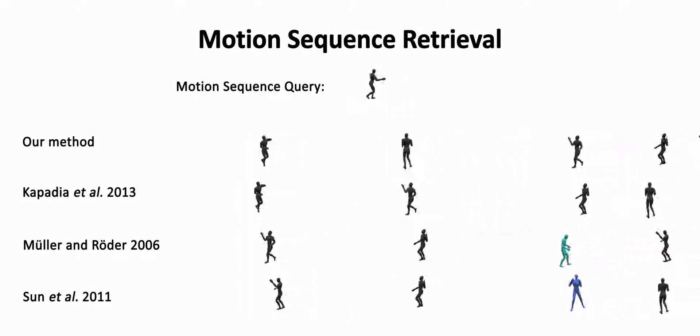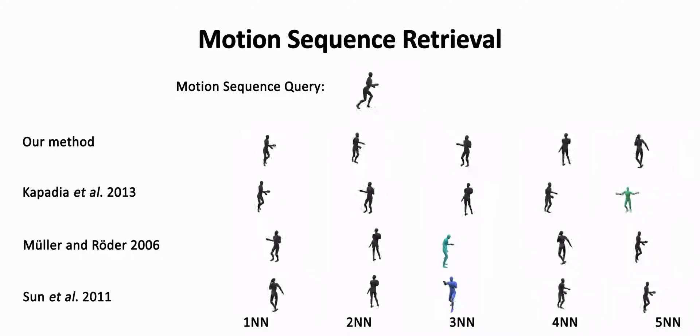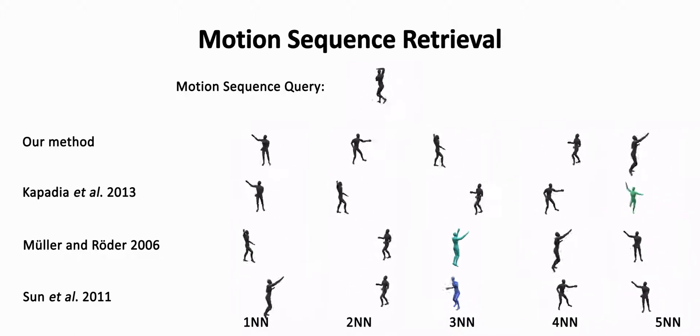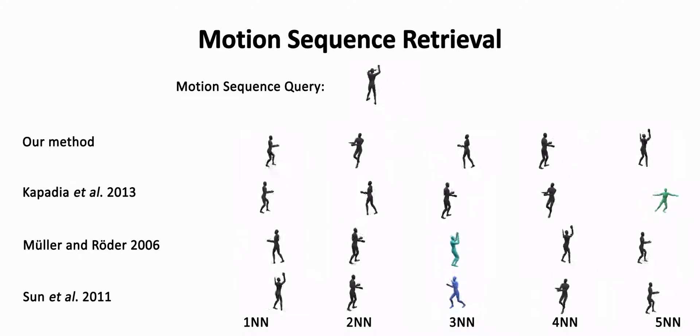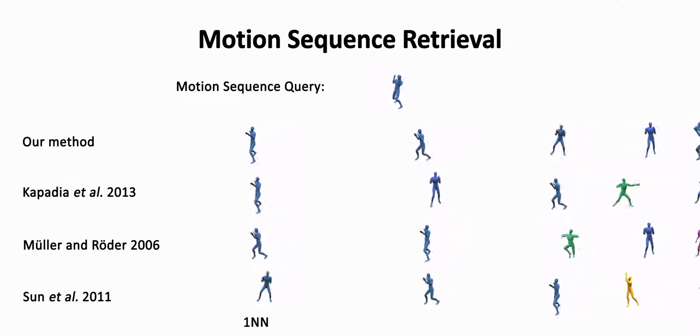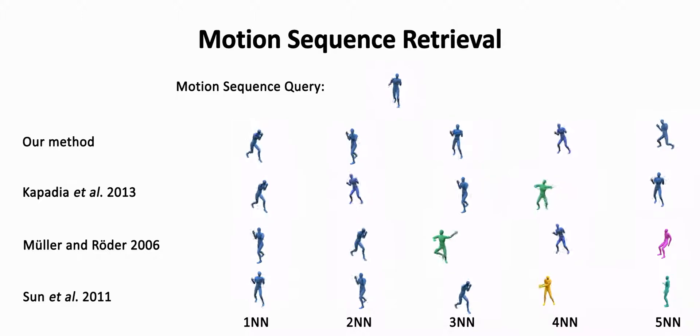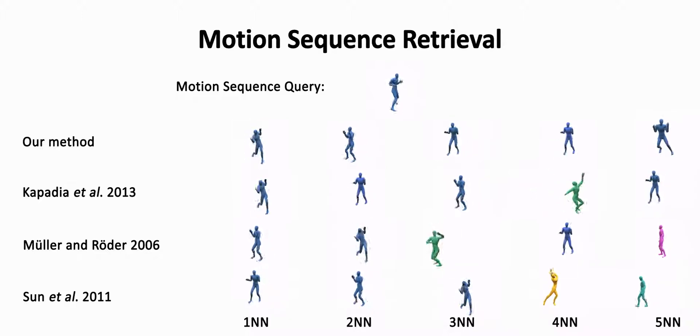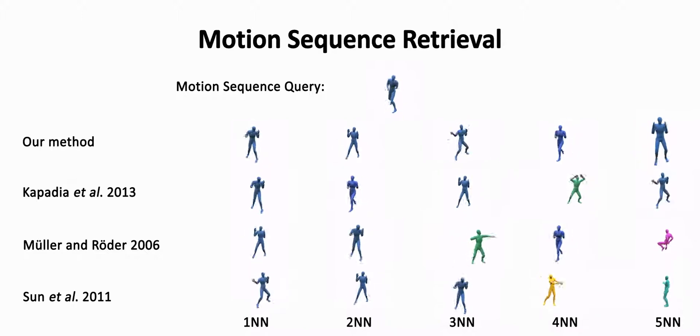Motion signatures can also be used as queries to extract similar motion sequences from a database. In the following two examples, we show the five nearest motions to a given motion sequence query. We compare the retrieved motions using ours and other methods. Motions from a different class are shown in a different color. Results demonstrate that our method achieves higher accuracy compared to other methods.